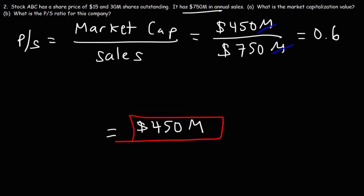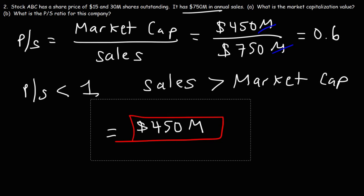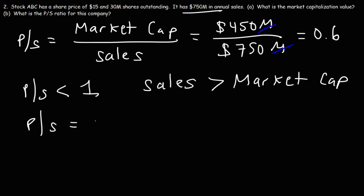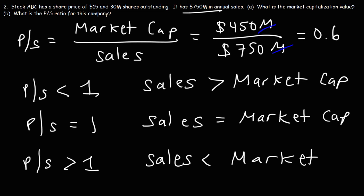Notice that the PS ratio is less than 1. When a PS ratio is less than 1, this means that the sales of the company is greater than the market cap. As you can see, sales is $750 million and the market cap is $450 million. A PS ratio of 1 means sales equals the market cap, and a PS ratio larger than 1 means sales is less than the market cap. So a company with a low PS ratio is a company with a large amount of sales.